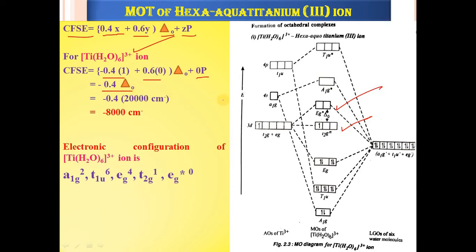For [Ti(H₂O)₆]³⁺, the complex absorbs light near 500 nm, and the absorption maximum is approximately 20,000 cm⁻¹, which is the value of ΔO. Using the formula: CFSE = −0.4 × 20,000 = −8,000 cm⁻¹. This is the CFSE value for [Ti(H₂O)₆]³⁺. In MSc entrance exams, questions on this calculation will be asked.